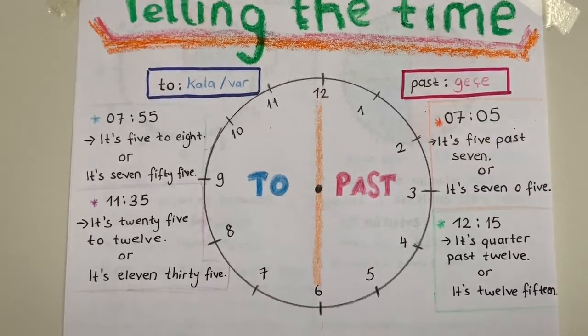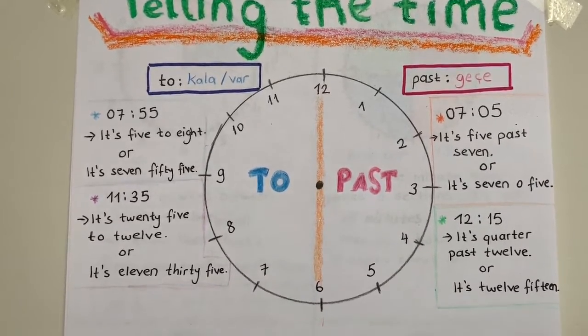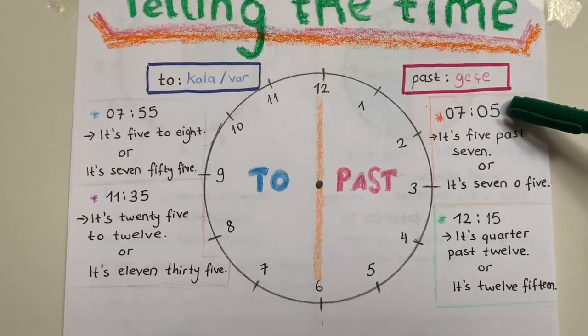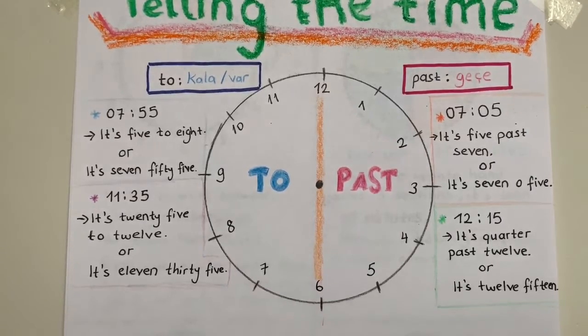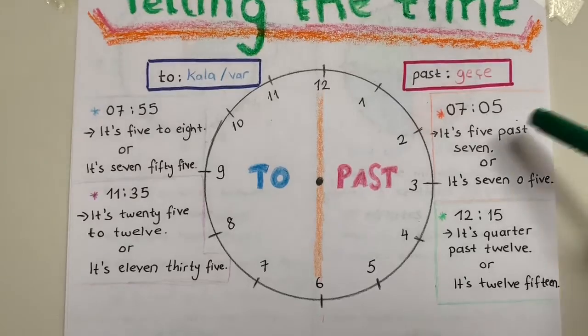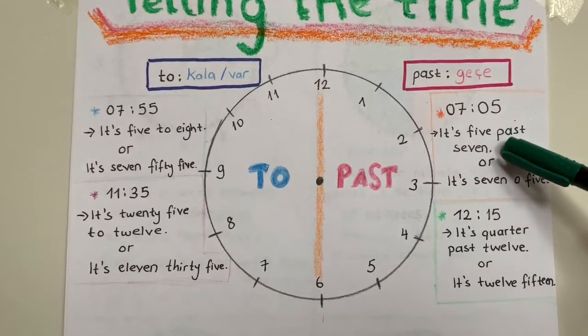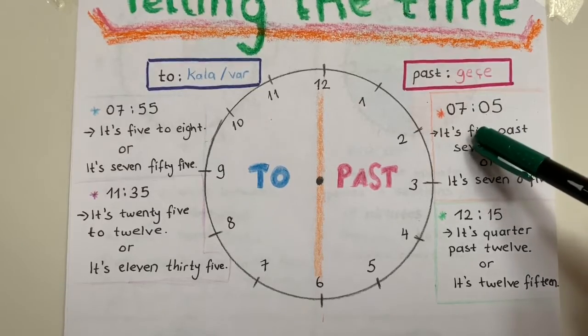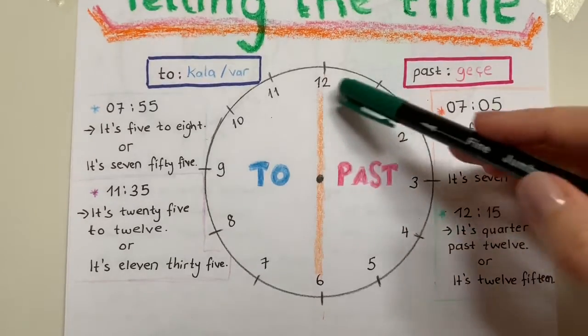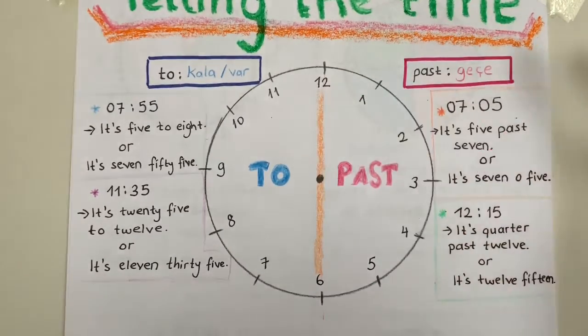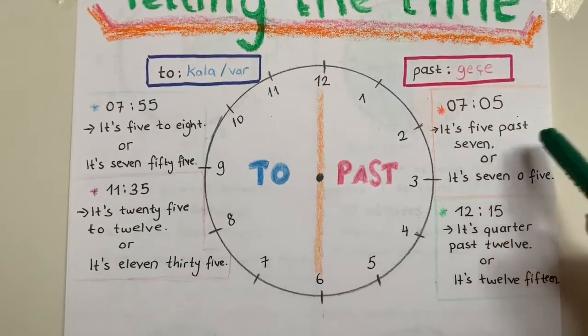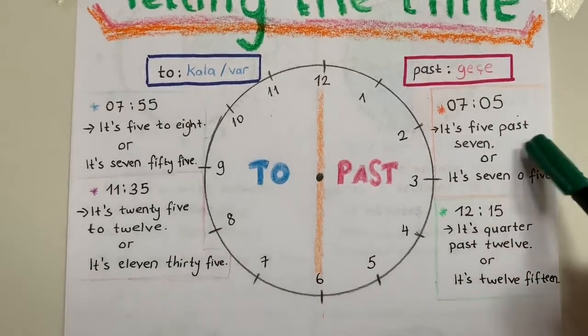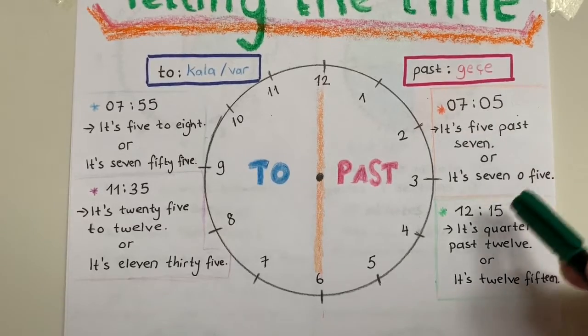7:05 - when I see this, this is a digital time, so I say it is five past seven. Past, because it's between here, so I say it is five past seven. Or, because this is digital, I can